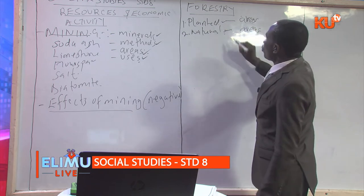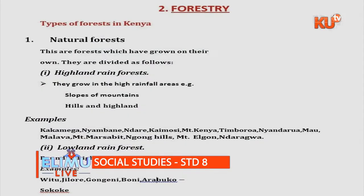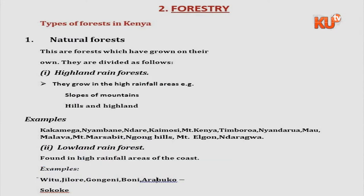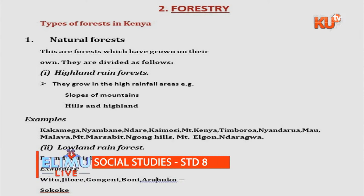You should also know the characteristics of planted forest and of natural forests. Natural forests are most commonly found growing on their own and are divided into two: highland and lowland. These natural forests are most commonly found in the areas of Kakamega, Nyambane, Ndare, Kaimosi, Mount Kenya, Timboroa, Nyandarua, Mau, Malava, Marsabit, Ngong Hills, and Mount Elgon.